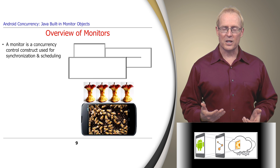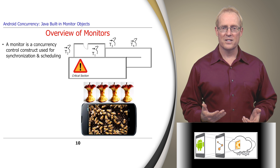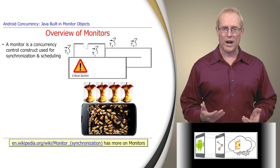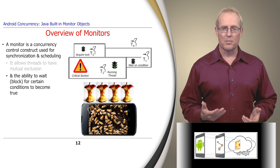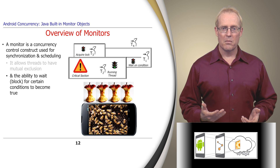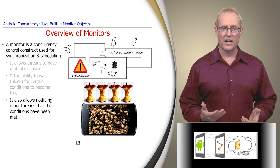A monitor is a classic concurrency control mechanism that can be used to coordinate the synchronization and scheduling of multiple threads that access and interact in a critical section. In particular, a monitor allows threads to have both mutual exclusion and the ability to block while waiting for certain conditions to become true. Monitors also have a mechanism for notifying other threads that the conditions they're waiting on have been met, so those threads can continue their processing accordingly.